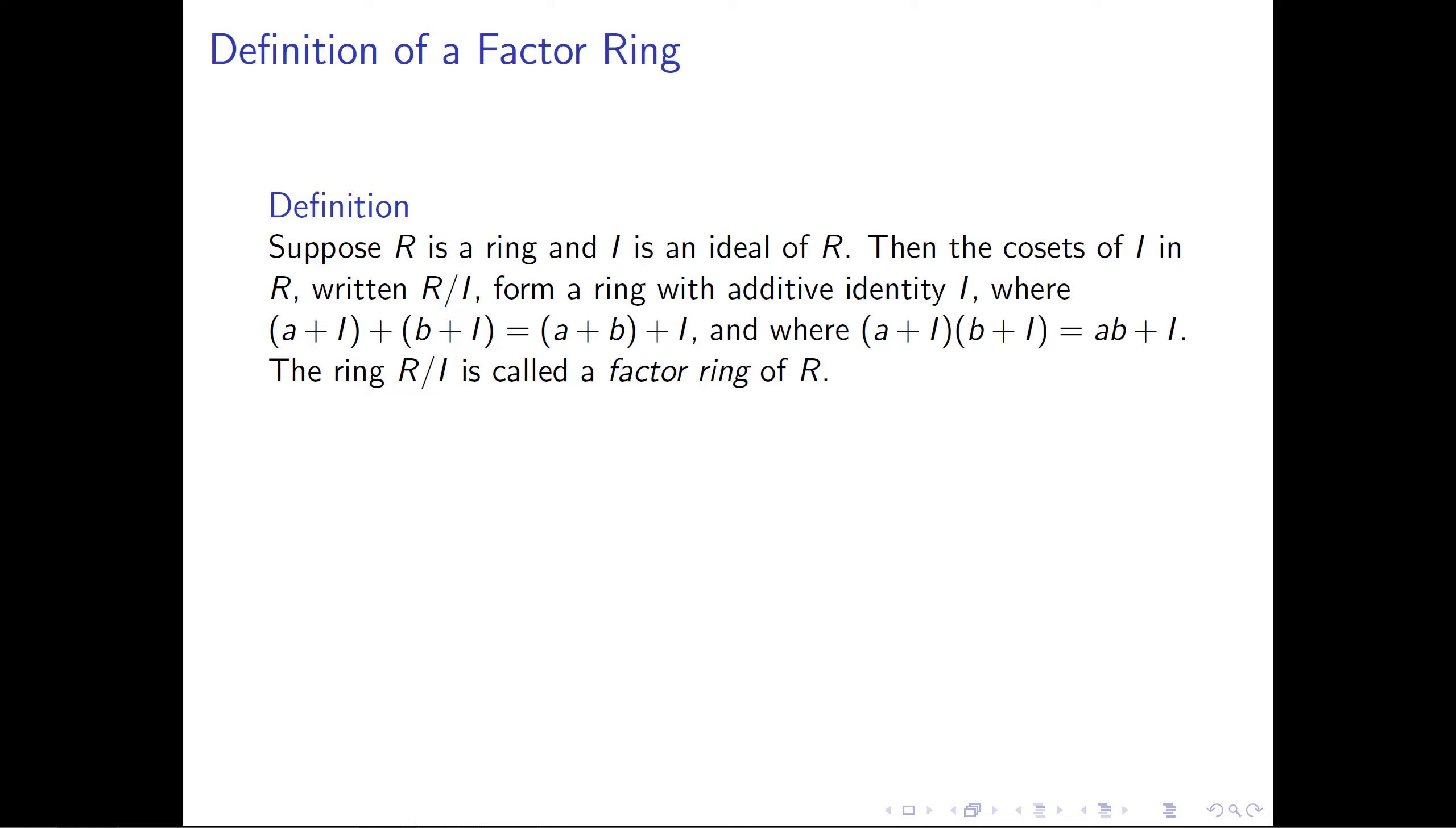The addition operation is the same as it was for factor groups. So when we take two cosets (a + I) and (b + I) and add them, what this should be is (a + b) + I, the way that it was just way back in group theory.